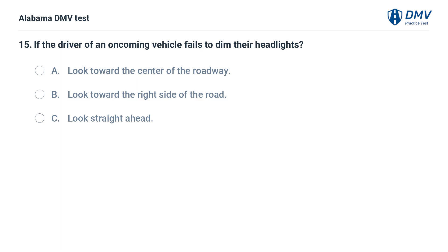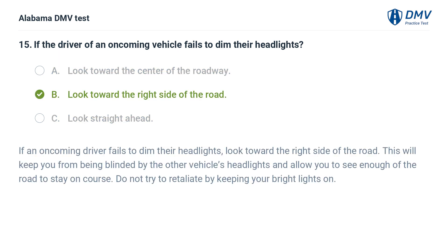If the driver of an oncoming vehicle fails to dim their headlights: A. Look toward the center of the roadway. B. Look toward the right side of the road. C. Look straight ahead. Correct answer: B. Look toward the right side of the road. This will keep you from being blinded by the other vehicle's headlights and allow you to see enough of the road to stay on course. Do not retaliate by keeping your bright lights on.